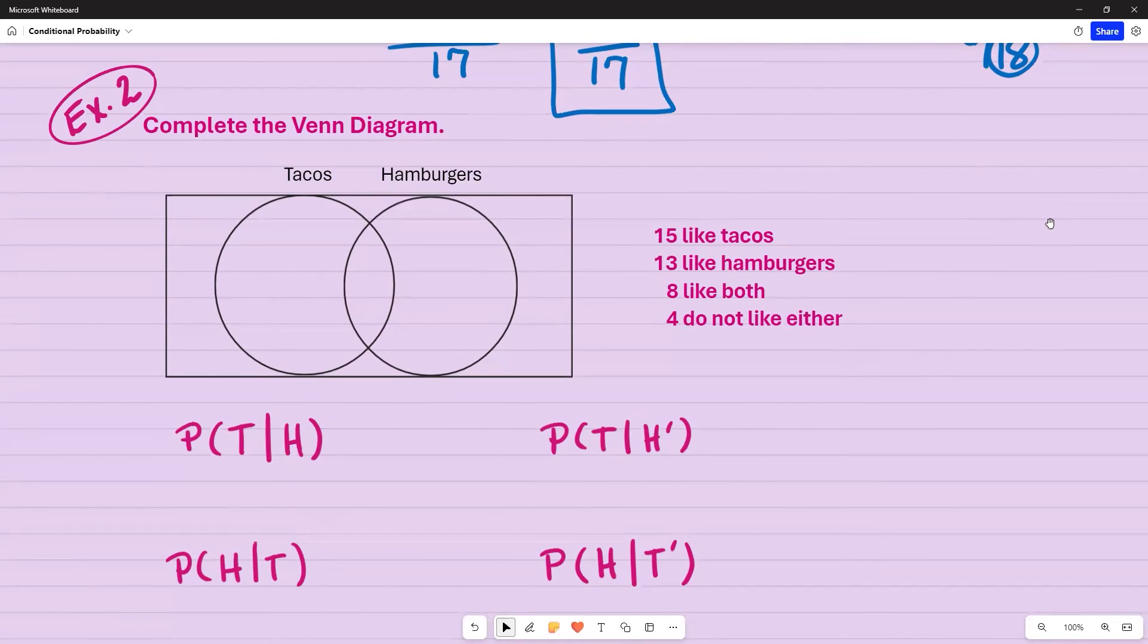So in example two, we're asked to complete the Venn diagram. And we're given this information here. So be careful. It says 15 like tacos. The whole circle has to be a total of 15. So you have to be careful not to put 15 over on this side by itself. So what you want to start with is where they intersect. So I have eight people who like both tacos and hamburgers. So that's going to be inside of this portion here where they overlap. So that's where I put my eight. 15 people like tacos. So that means the entire circle has to equal 15. So that's going to be seven plus eight or 15 minus eight would have given me that seven. 13 like hamburgers, 13 minus eight equals five. And then four do not like either. So that's going to go in my universal set here.